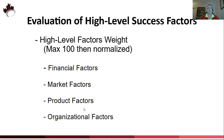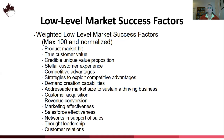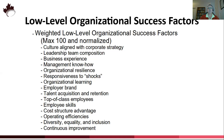Underneath these high-level factors, we have a series of low-level factors. This is the list of the low-level factors under the financial success category. Using expert judgment, we hope to weight these factors compared to each other and normalize them so they sum to 1. Similarly, there are low-level factors for market success, low-level factors for product success, and low-level factors for organizational success.